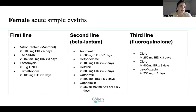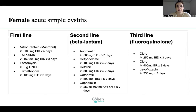If for whatever reason you cannot give any first-line drugs due to allergies, second line is your beta-lactams. These include Augmentin 500 mg twice daily for five to seven days; cefpodoxime 100 mg twice daily for five to seven days; cefdinir 300 mg twice daily for five to seven days; cefadroxil 500 mg twice daily for five to seven days; and cephalexin 250 to 500 mg every six hours for five to seven days. To keep it simple, just remember beta-lactams are second line — Augmentin is a good choice to remember.